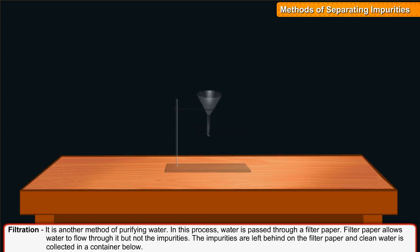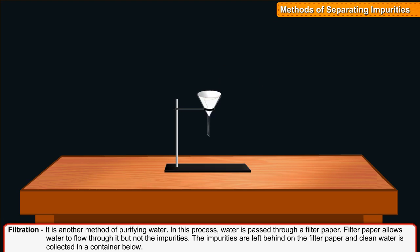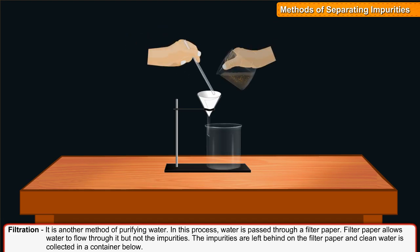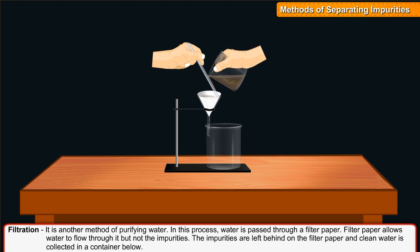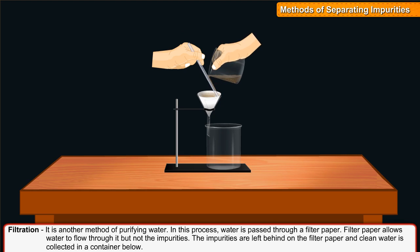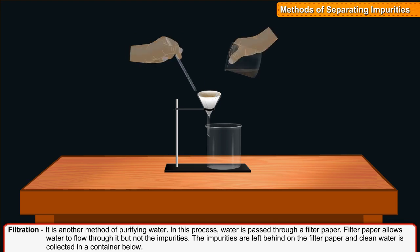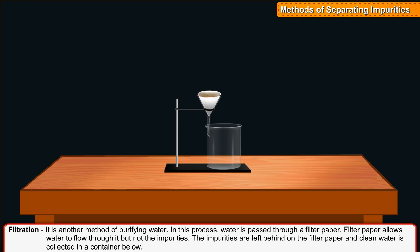Filtration is another method of purifying water. In this process, water is passed through a filter paper. Filter paper allows water to flow through it but not the impurities. The impurities are left behind on the filter paper and clean water is collected in a container below.